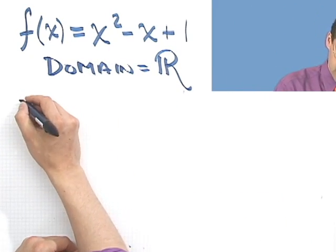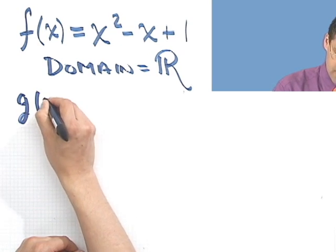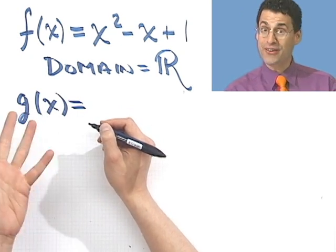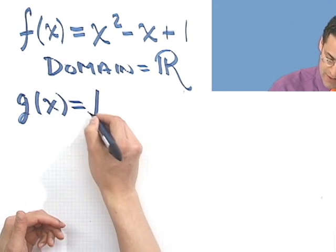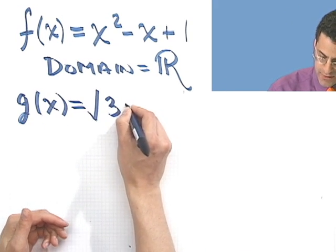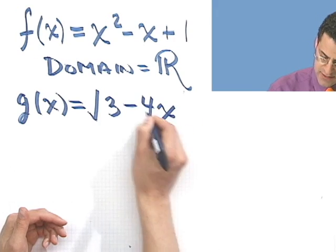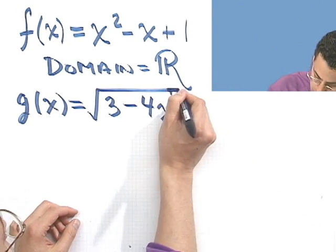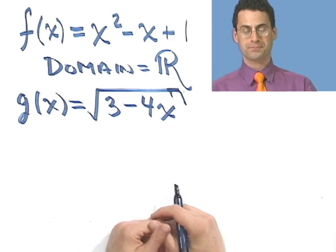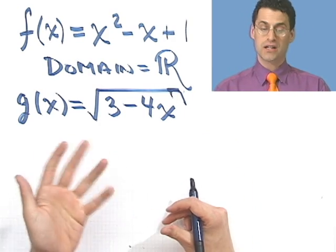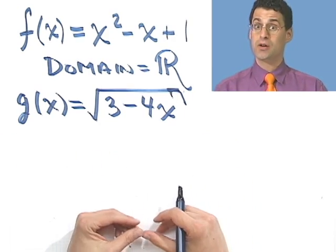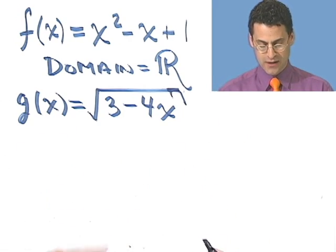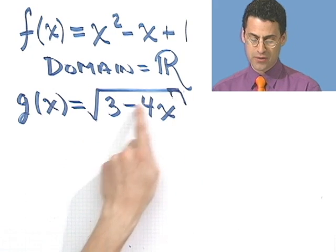So that wasn't too bad. How about this one? This next function I'll call g of x. Remember, that's just the name for it. I could have called it Sam of x or Mary of x. It doesn't make a difference. I'm calling it g. 3 minus 4x. And I take the square root of the whole show.